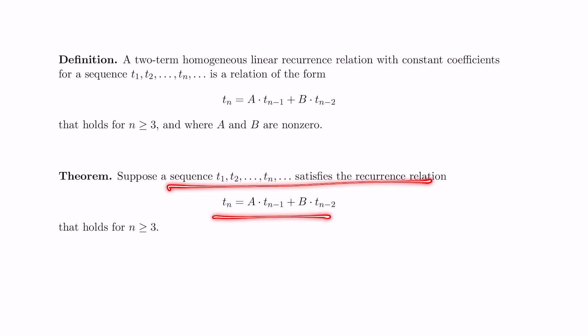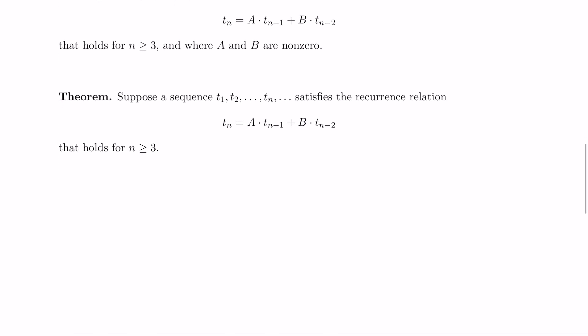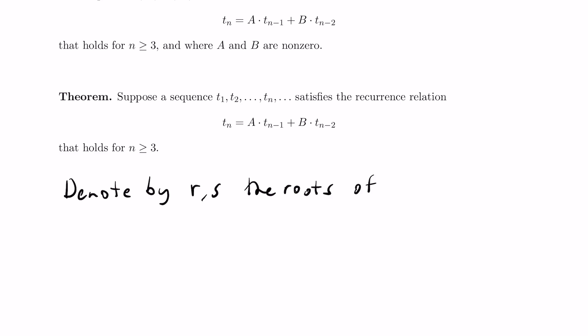So if we have a sequence like this and it satisfies a recurrence relation, and that holds for all n greater than or equal to 3, so you have some base cases when n is 2 or 1, then we let r and s be the roots of a specific quadratic that we get from these coefficients. It's going to be x squared minus ax minus b. We should mention these are not necessarily distinct, so you could have a repeated root here.